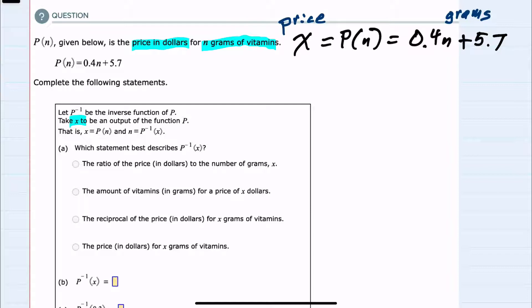So our current function puts in the number of grams and outputs the price. For question A, we're asked which statement best describes P inverse of x. The inverse function will be the opposite—instead of putting in grams to get price, we'll put in price to get grams.